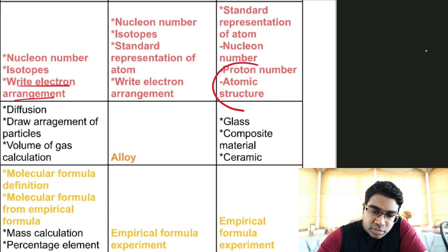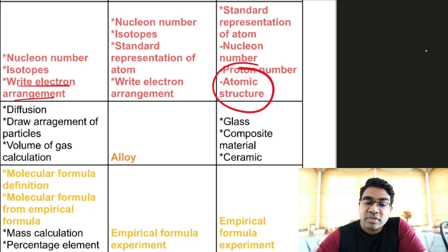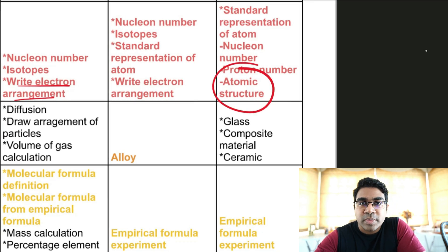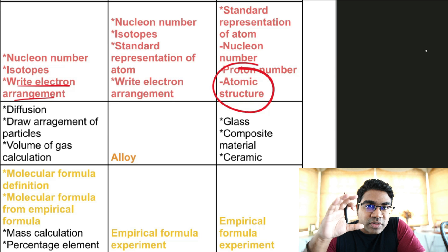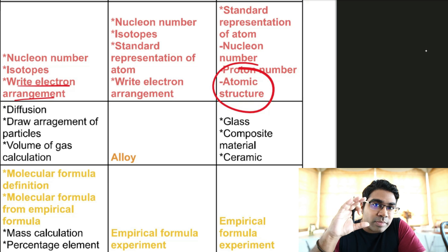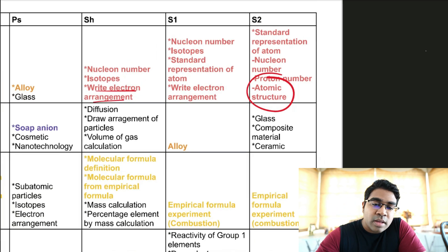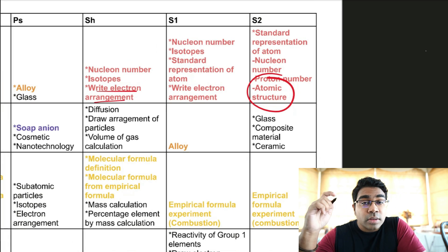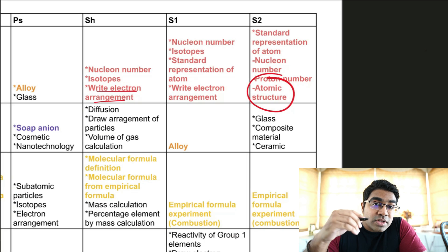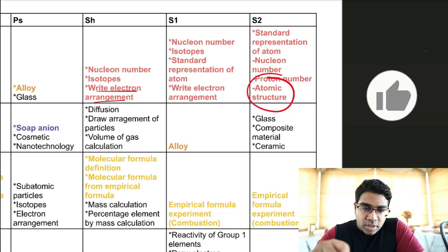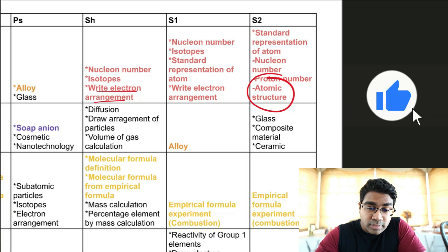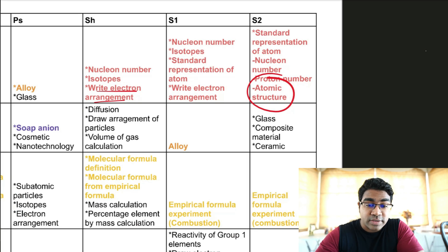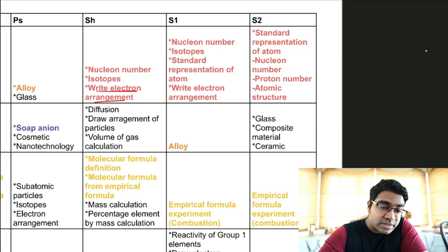Don't forget about atomic structure — atomic structure is not the same as electron arrangement. Atomic structure contains the number of protons and number of neutrons as well. I'll be doing a last minute revision video to cover as much of these topics as I can, and I'll leave the link in the description below when it's done.